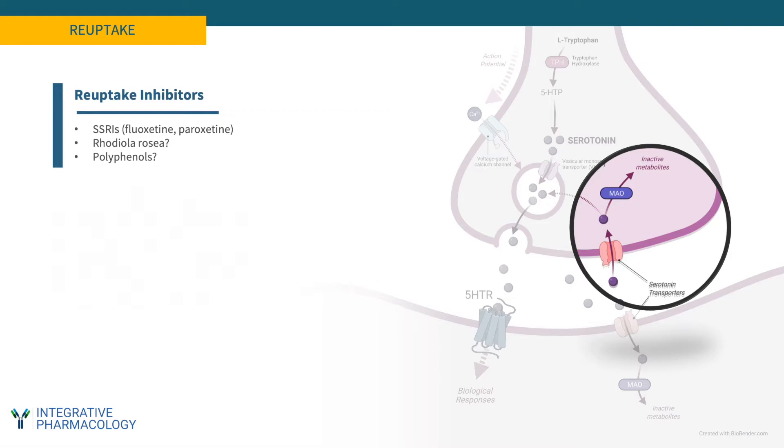Serotonin reuptake inhibitors are a widely used class of antidepressants. They include fluoxetine and paroxetine that inhibit the reuptake of serotonin by reducing the actions of the transporter that's required for that reuptake. Natural products that might also inhibit this transporter include polyphenols and constituents of certain herbal medicines like rhodiola rosea, but the research on these substances is rather premature to assume that this is the major mechanism by which they elicit their effects.